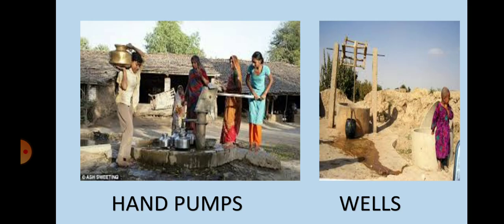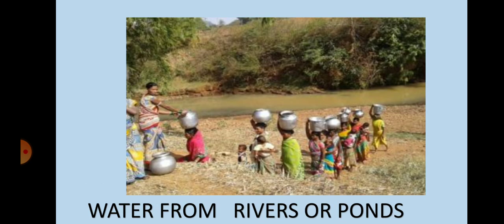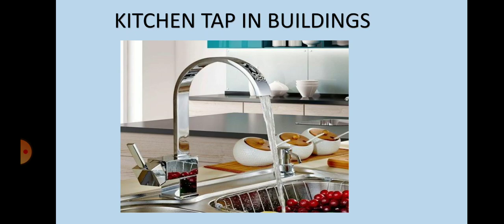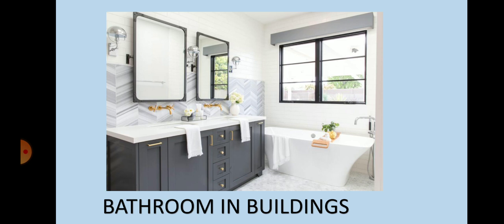In the villages, people get drinking water from hand pumps, wells, or from rivers or ponds. Some of them have to walk long distances to get drinking water. Whereas in tall buildings in the cities, water is available inside the house through the taps. Bathrooms are also located inside the buildings.